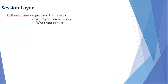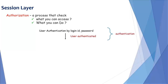Next process is authorization. Authorization is a process that checks what you can access and what you can do on accessed resources. After user authentication, the server checks which files, folders, and other resources can be accessed by the user.